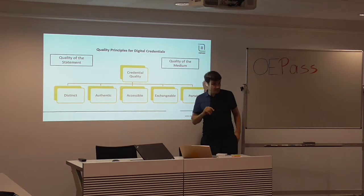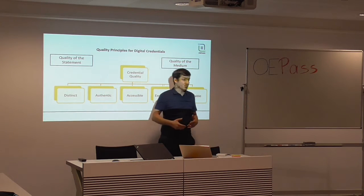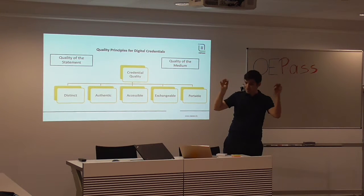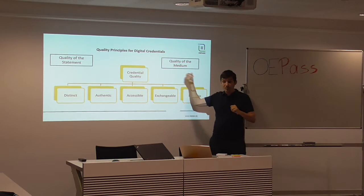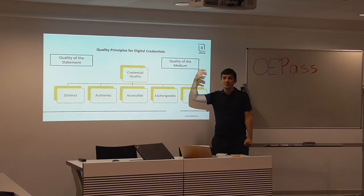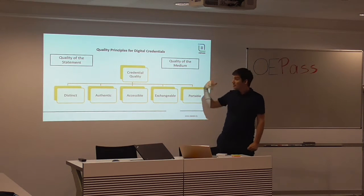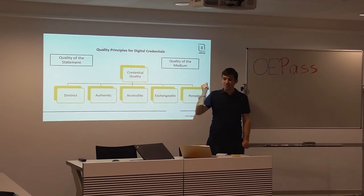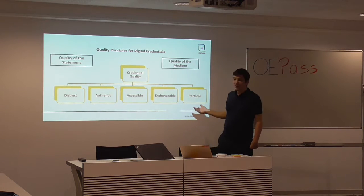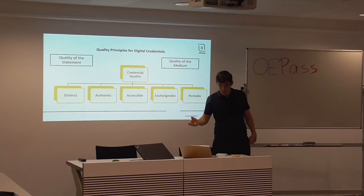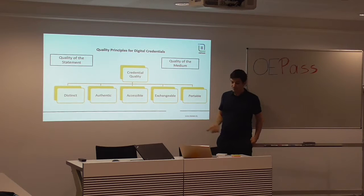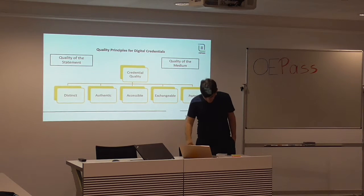What we found is that we have to look into, first of all, the quality of the statement — what stands behind the quality of what's written in the credential — and secondly, the quality of the medium. By the quality of the medium, you remember we defined the credential as a documented statement. So quality of the statement and quality of the document it is written in. What we found is that there are five elements of quality that can apply to each tool: distinctiveness, authenticity, accessibility, exchangeability, and portability.